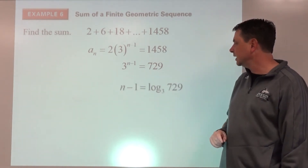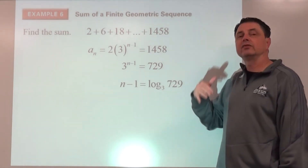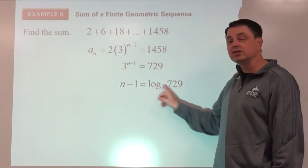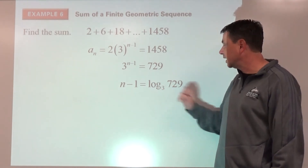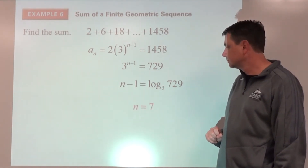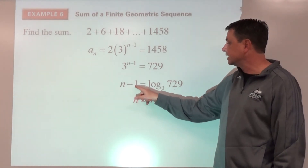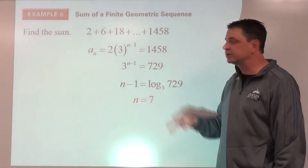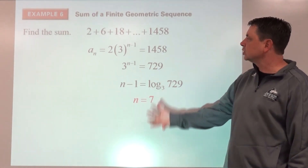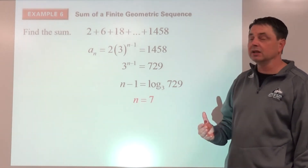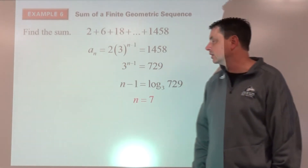Using the change of base formula: log 729 divided by log 3 equals 6. Remember it's n minus 1 equals 6, so add 1 to both sides — n equals 7. We're working with s-sub-7. Since r is positive, the calculation is more straightforward.